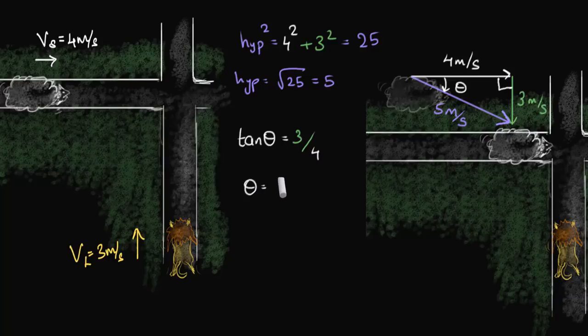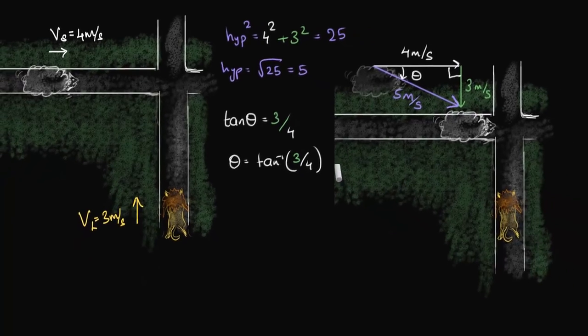That makes theta equals tan inverse of 3 divided by 4. And there we have it. So, if someone asks you now, what's the relative velocity of the sheep, as seen by the lion, we could just say it's 5 meters per second at an angle of tan inverse of 3 by 4 with the horizontal or something like that.